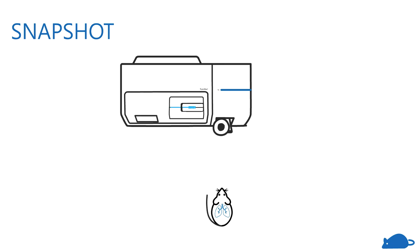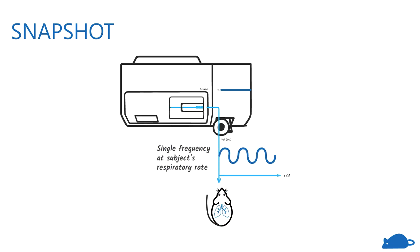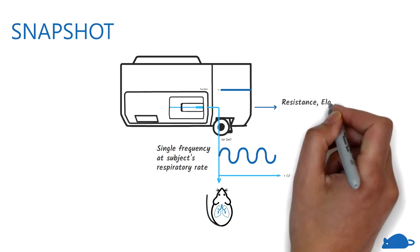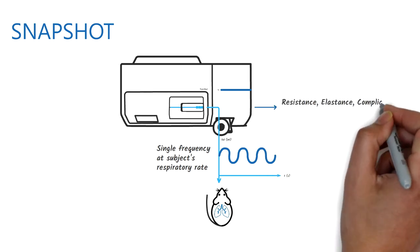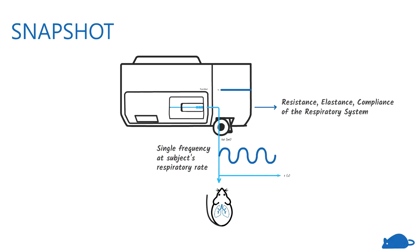In the snapshot measurement, the lungs are given a single frequency signal matched to the subject's respiratory rate. Using the signal, the flexi-vent calculates the resistance, elastance, and compliance of the respiratory system.